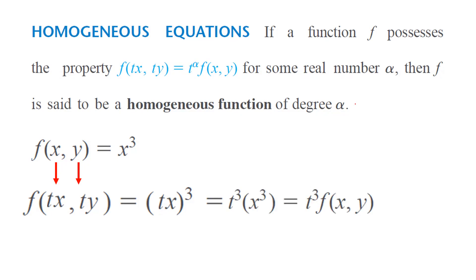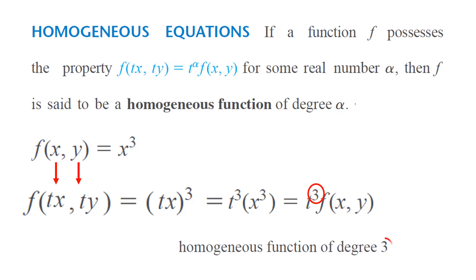Doing the algebra gives t to the third times x to the third, which is t cubed times f of x and y. Based on the definition, this is a homogeneous function of degree three, since the exponent of t is three.